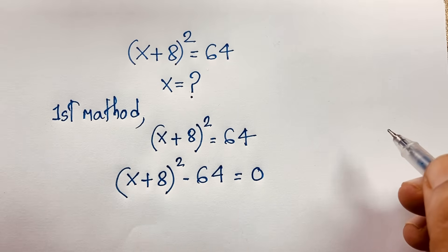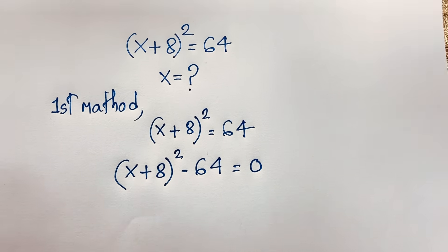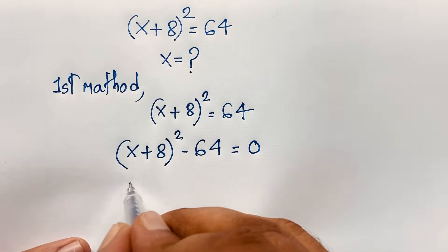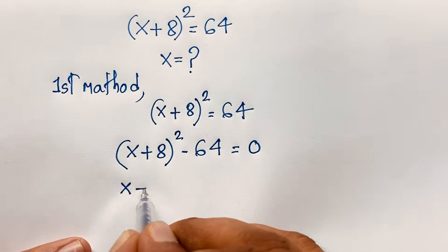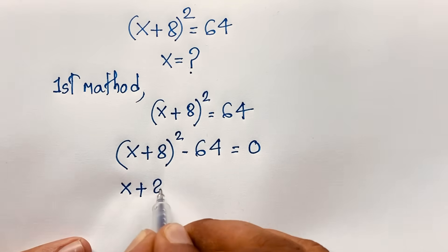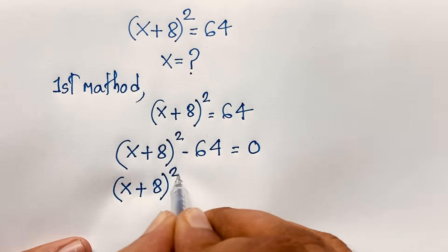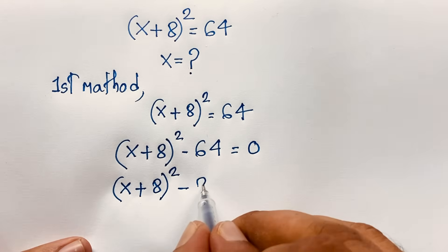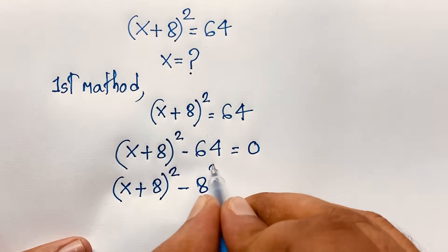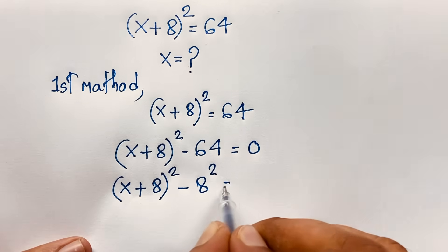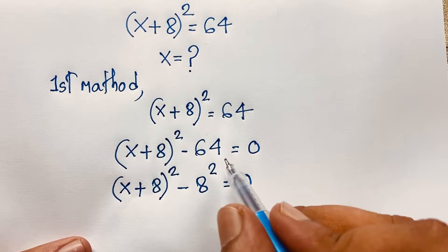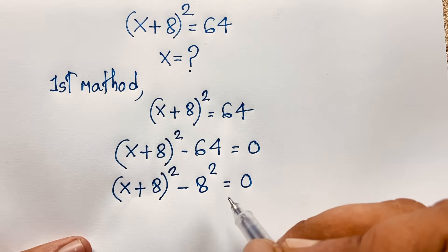I subtract 64 from both sides. Now, (x + 8)² minus 64, and 64 is 8 to the power 2, so this becomes (x + 8)² − 8² = 0. Since 8² = 64.